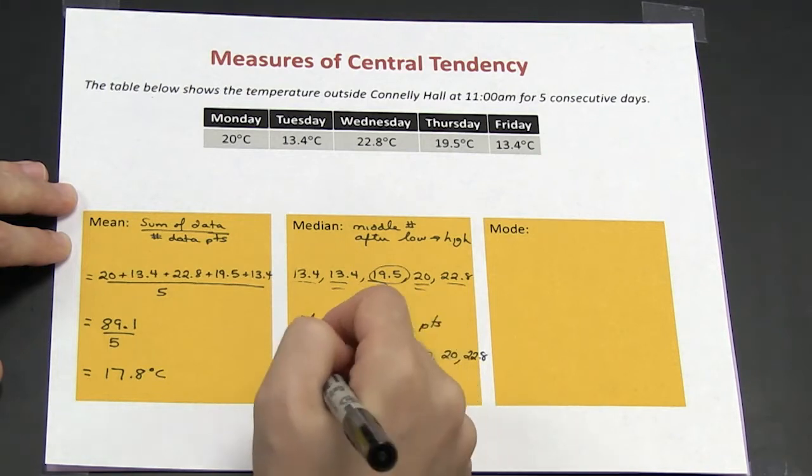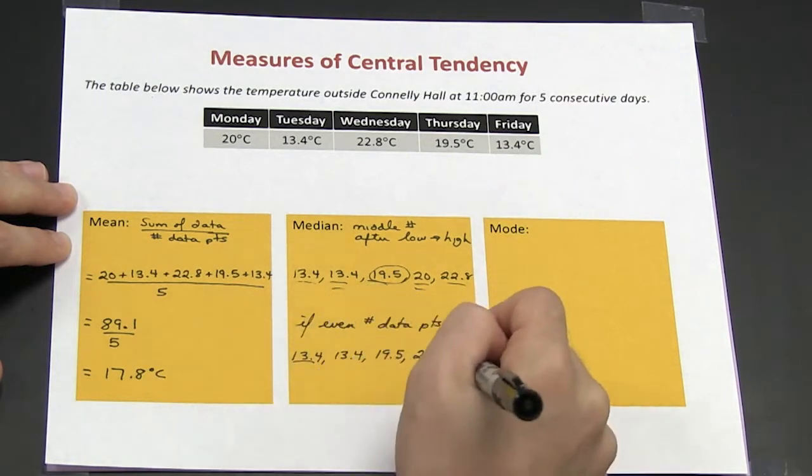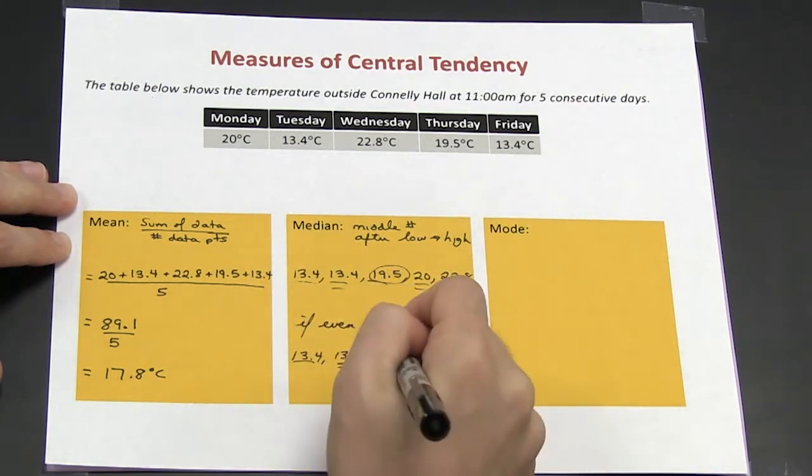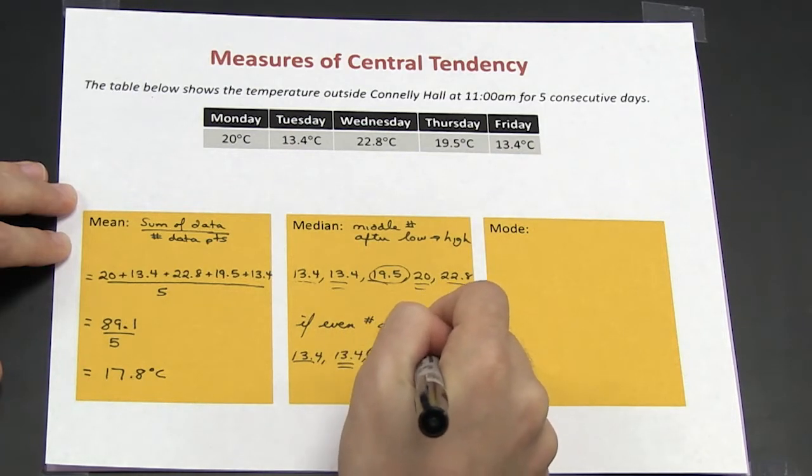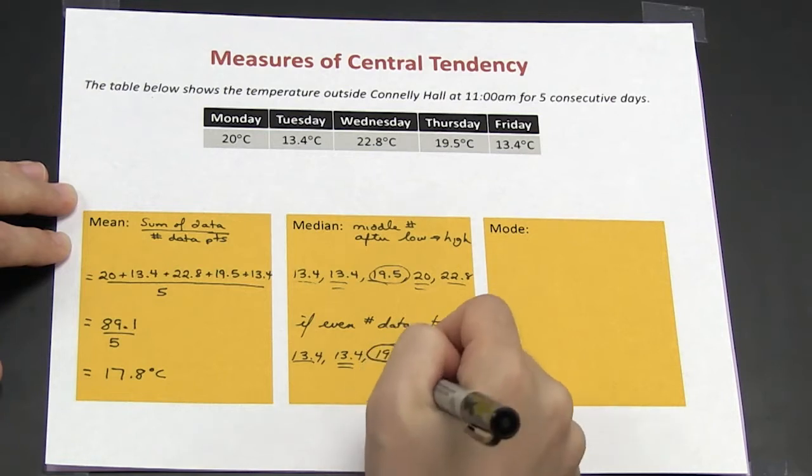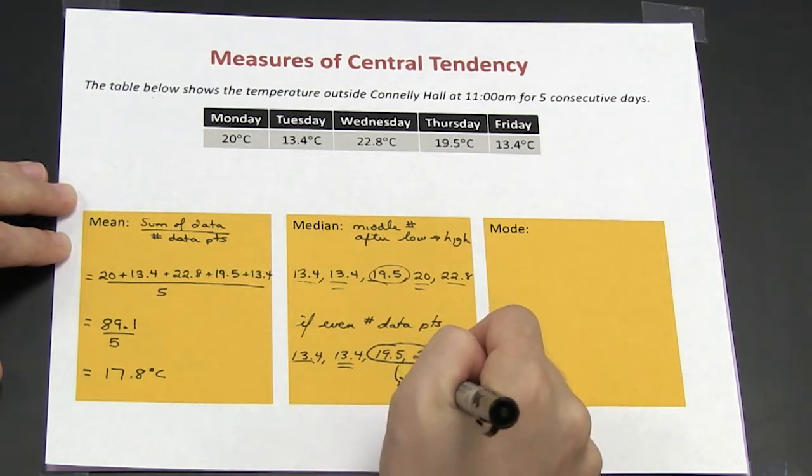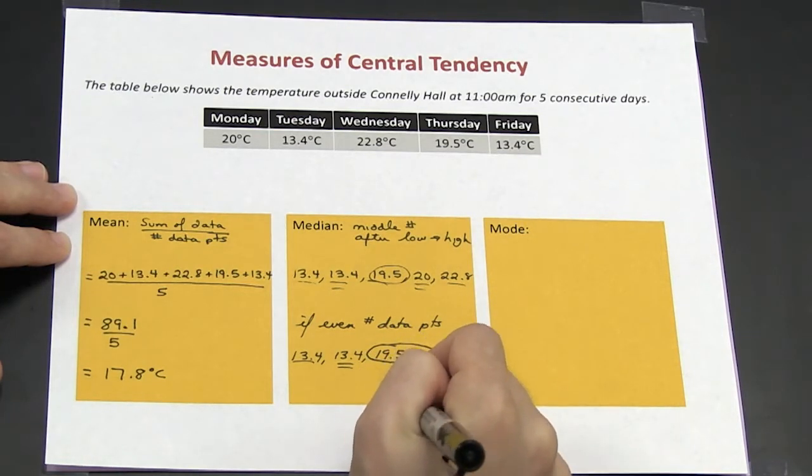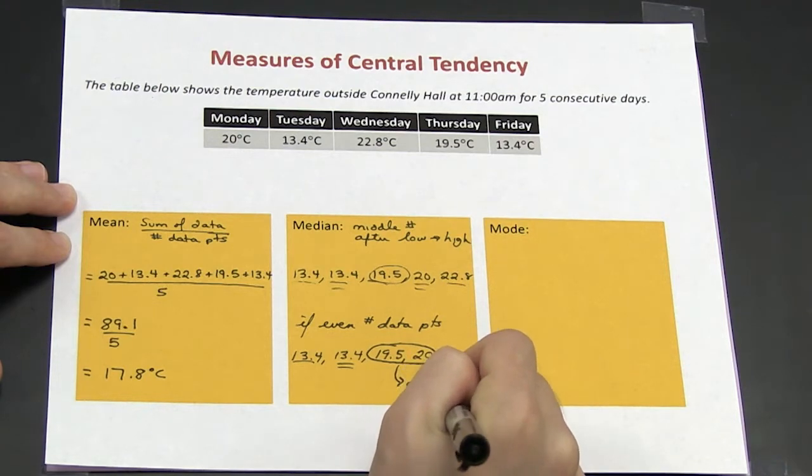I again look for the number that's in the middle, and you'll see that the middle two numbers are 19.5 and 20. So to calculate the median, I'll take the average of these two numbers, and that gets me 19.75 degrees.